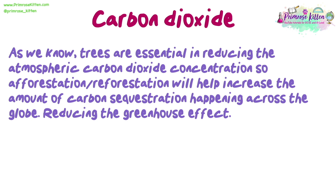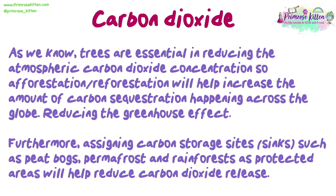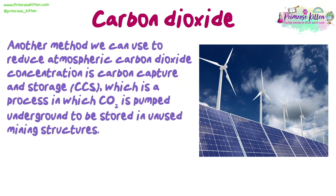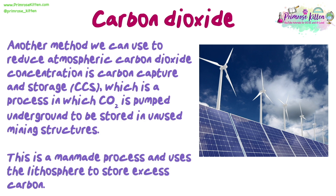Trees are essential in reducing atmospheric CO2 concentration, so afforestation or reforestation will help increase carbon sequestration globally, reducing the greenhouse effect. Assigning carbon storage sites or sinks such as peat bogs, permafrost and rainforest as protected areas will also help reduce CO2 release. Another method is carbon capture and storage (CCS), a process in which CO2 is pumped underground to be stored in unused mining structures, using the lithosphere to store excess carbon.